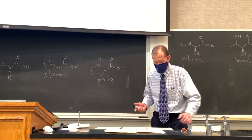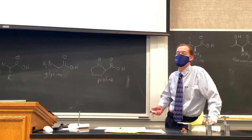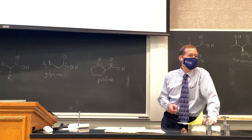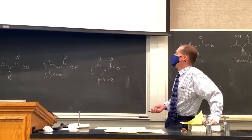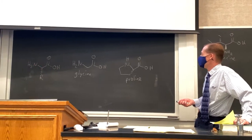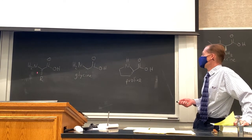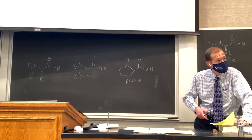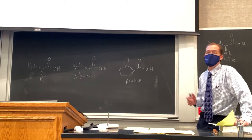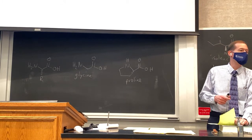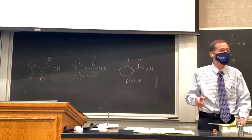Most of you are probably familiar with amino acids to some degree — we did mention them back in chapter 19. I've drawn the general formula for an amino acid on the board. We have our amino group, our carboxylic acid group, and then some sort of a side chain. I've drawn stereochemistry here because 19 of the common 20 amino acids are chiral, and they all exist with the same configuration.